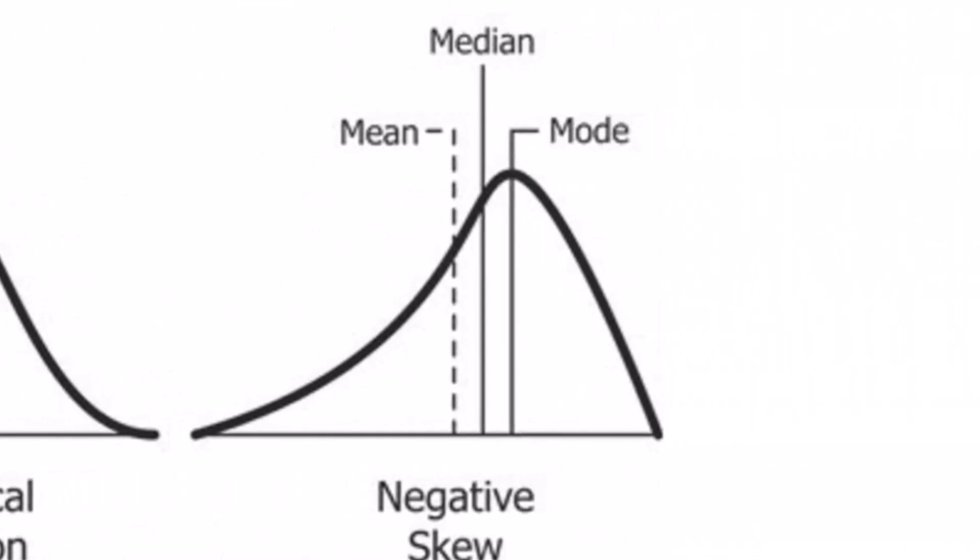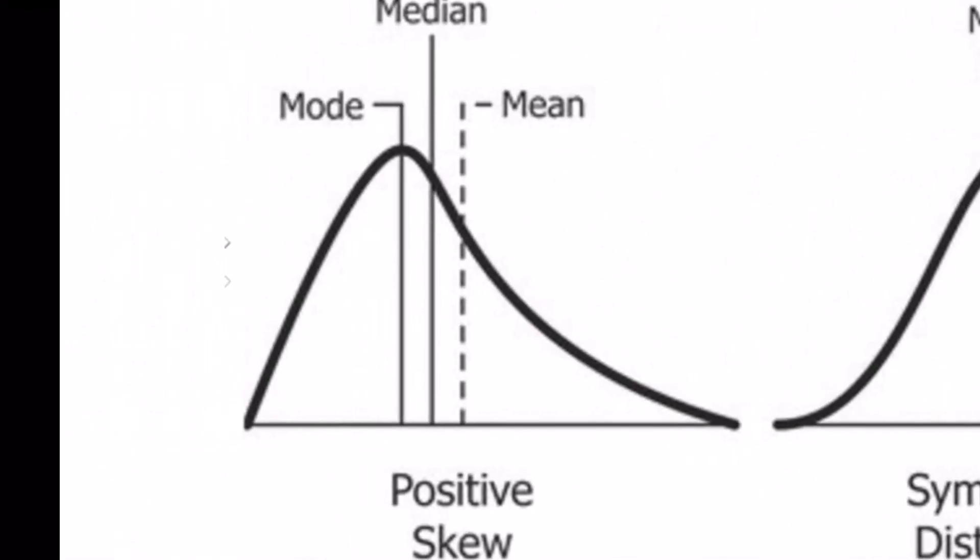If you have a lot of high test scores, then it would form a negative or left skew. That would mean that the mean would fall to the left. If you have a lot of low test scores, then the graph would look like a positive or right skewed graph. And the mean would fall to the right.